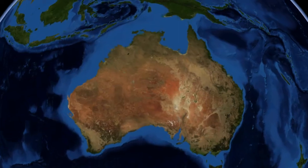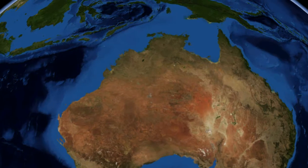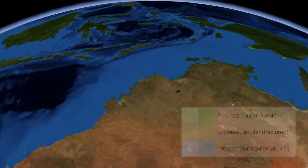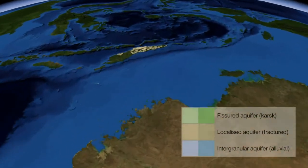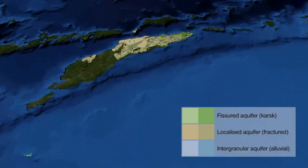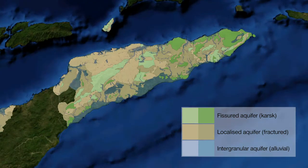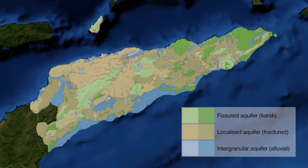The three main aquifers that make up Timor-Leste's hydrogeology are the localised fractured, fissured karst, and intergranular aquifers.